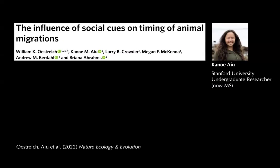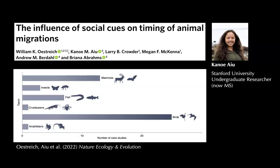One thing most of these papers have in common is something we found in a paper I worked on with great collaborators — understanding how animals use social information when making timing decisions in their migrations, work done with Kanoe, an outstanding undergraduate researcher now doing a master's thesis at Stanford University. We found that the distribution of taxa and ecosystems studied is really uneven: the vast majority of work has focused on birds and terrestrial mammals, leaving a gap in marine realms that have very different spatiotemporal ecosystem dynamics.